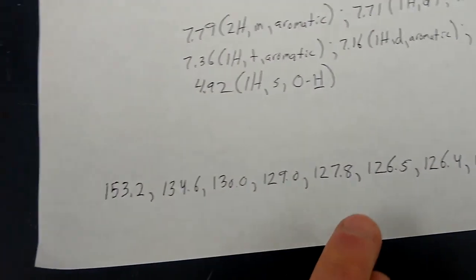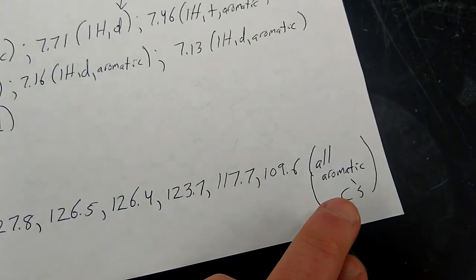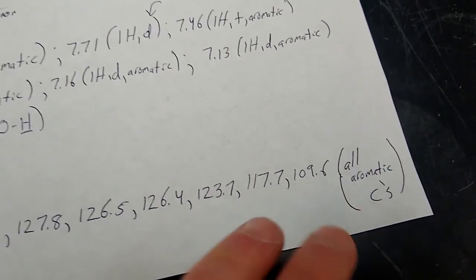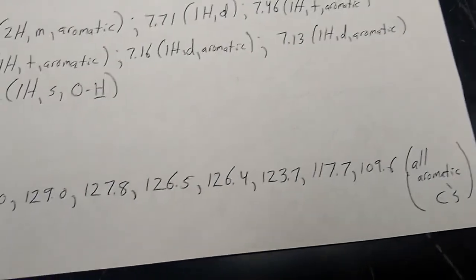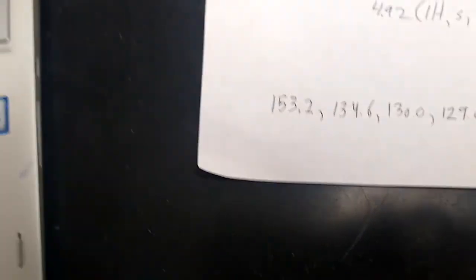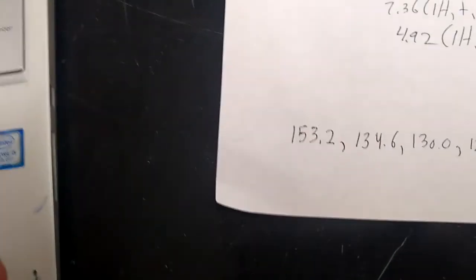You would just write out all of the signals you saw and you would just call them aromatics. And then if you did happen to have any aliphatic ones, you would write those out and note them as aliphatic. Or if you had a carbon with the carbonyl on it, you could call it a ketone or aldehyde or just a carbonyl carbon.